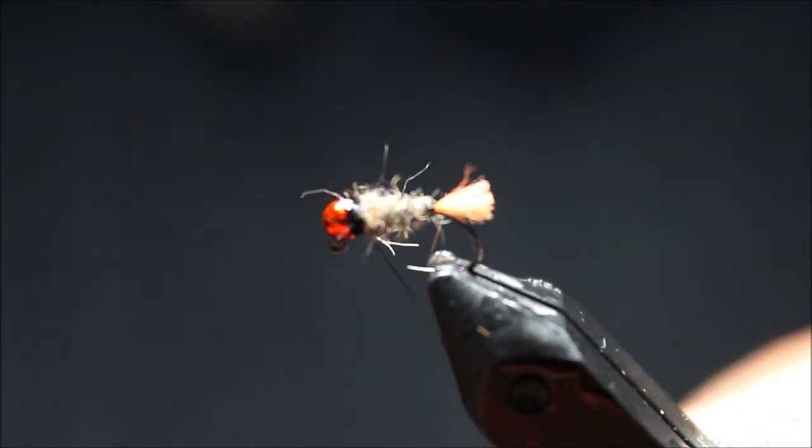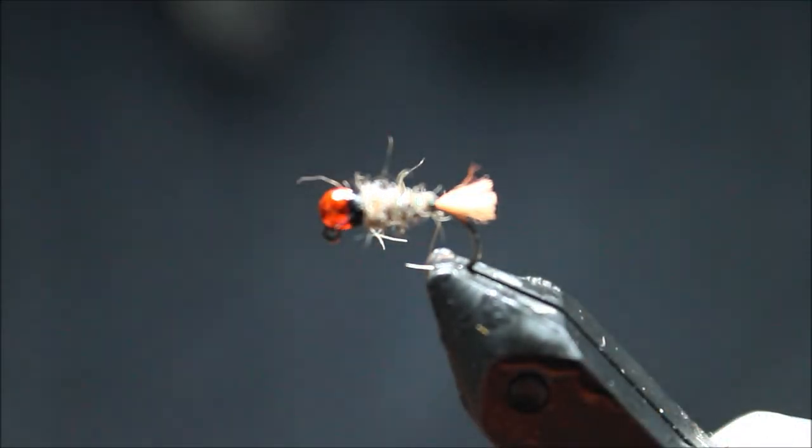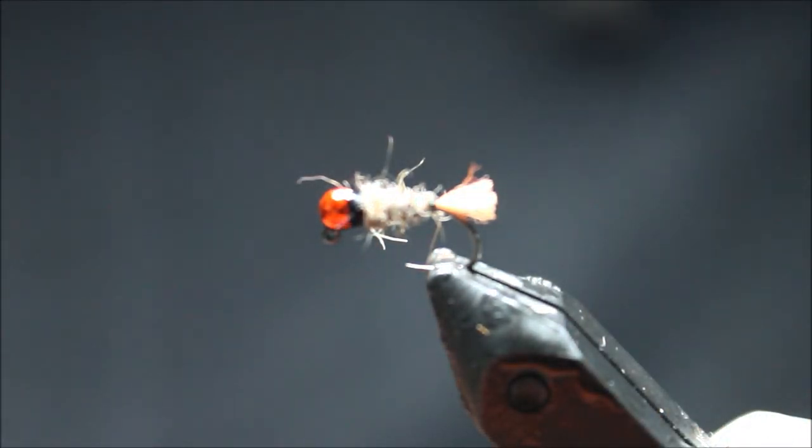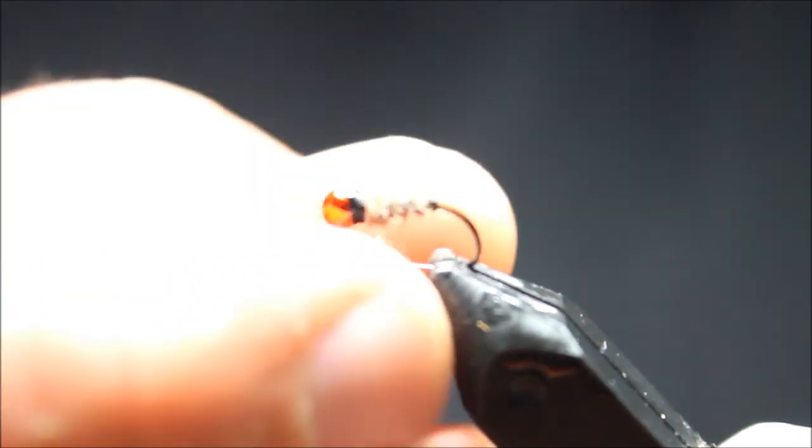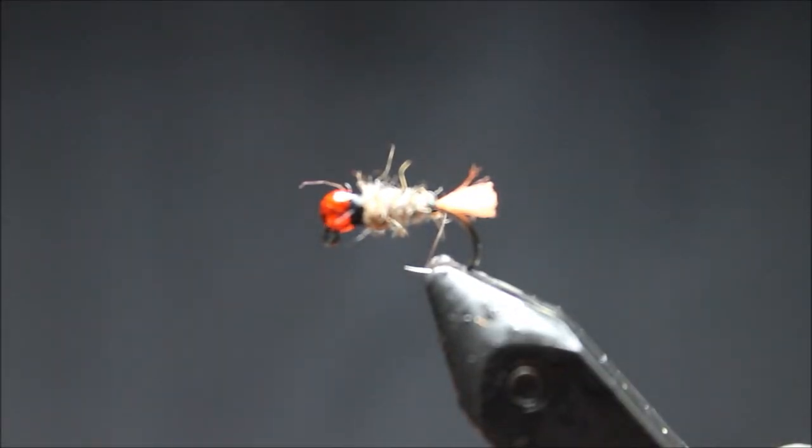That's just a quick nice hare's ear variant. I call the hairy orange. It does real well on the brown trout in the local tailwater that I fish, all the way up to a size... I'll tie that up to a size 8 or 10 if I really need something heavy to get down.